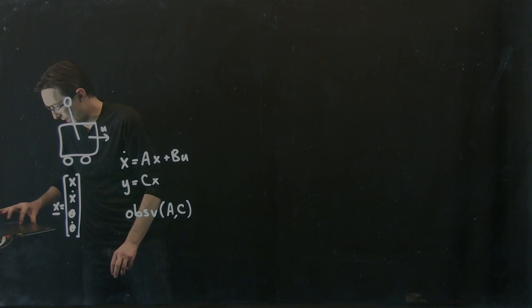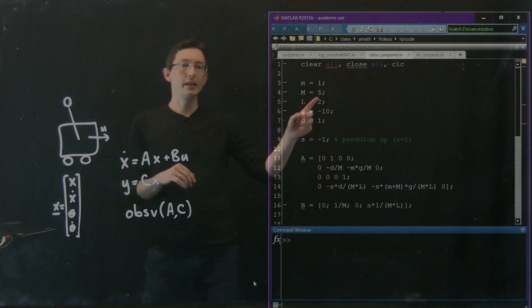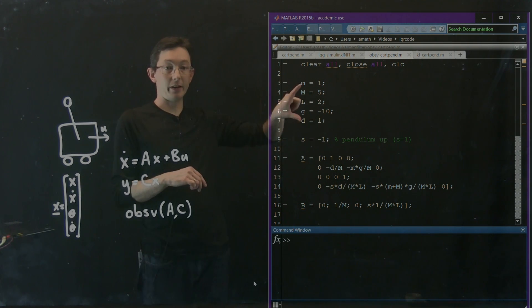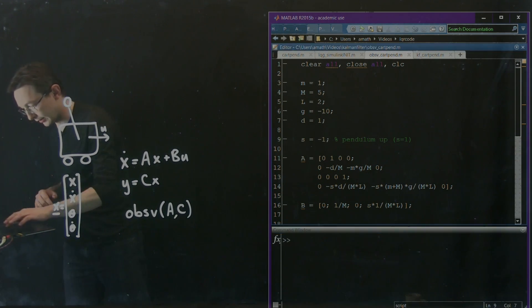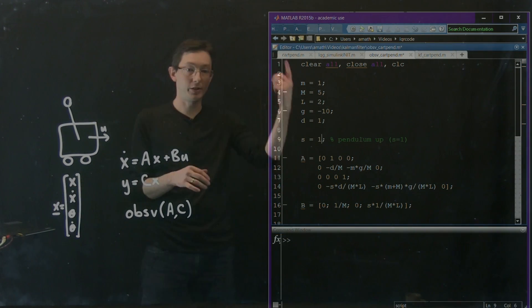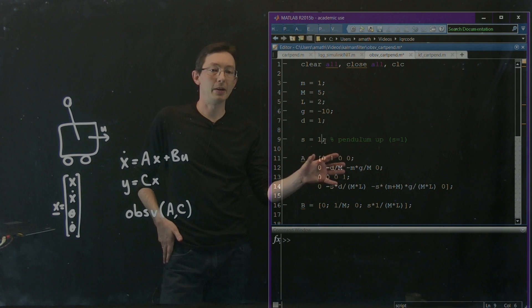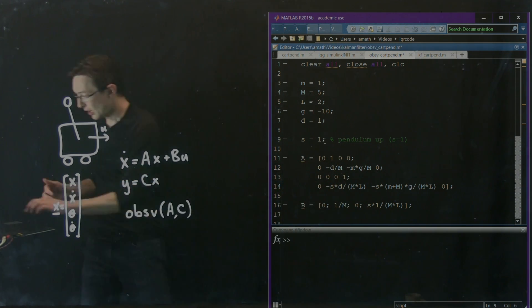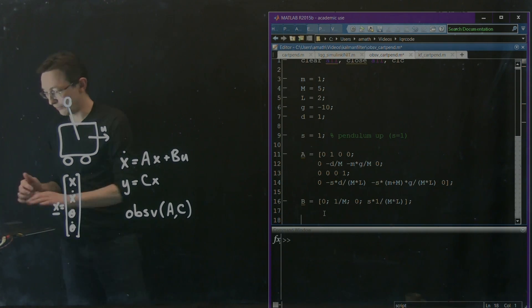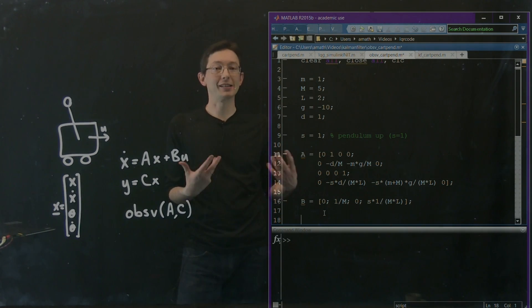I'm going to pull up MATLAB. Notice here, just like last time we defined our system parameters, I'm going to look at the pendulum up position just to start with. So I have my linearized dynamics in A, my actuator input in B.